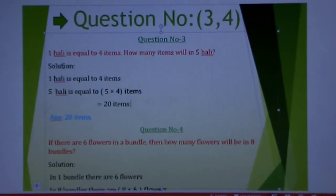Question number 1: 1 hali is equal to 4 items. How many items will in 5 hali? In this math, I have to find out how many items in 5 hali. If 1 hali is equal to 4 items, then 5 hali will have more items, so items will be increased. So, I have to do multiply. 1 hali is equal to 4 items. Therefore, 5 hali is equal to 5 multiply 4 items. 5 fours are 20 items. Answer: 20 items.